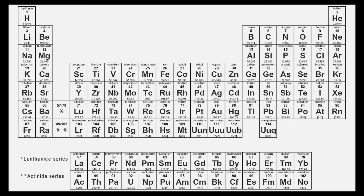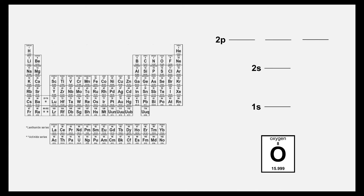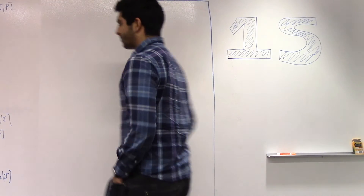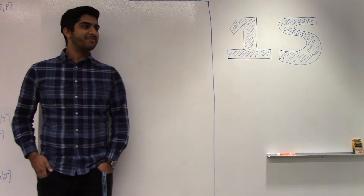Before dealing with molecules, we'll be dealing with atoms, and let's start with oxygen because you're always going to be dealing with period one and period two elements when you're drawing these. Oxygen has six valence electrons, and you need to know three basic principles. Number one: the Aufbau principle — orbitals are filled with electrons from lowest to highest energy.